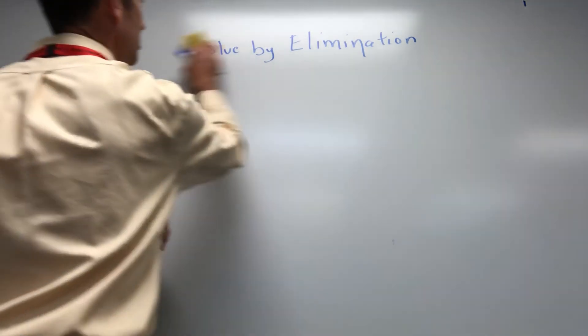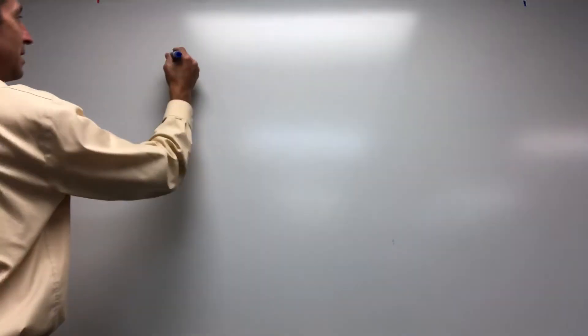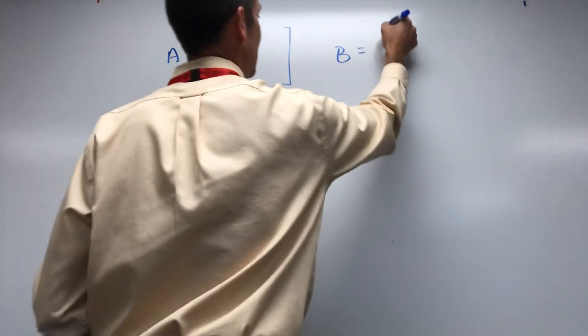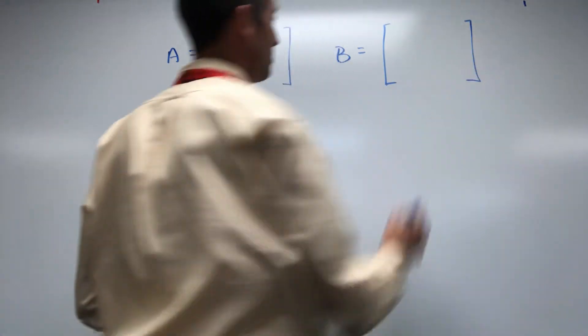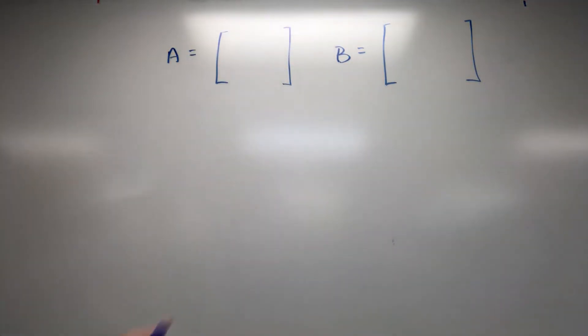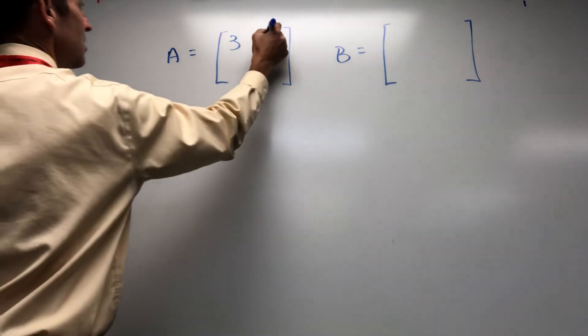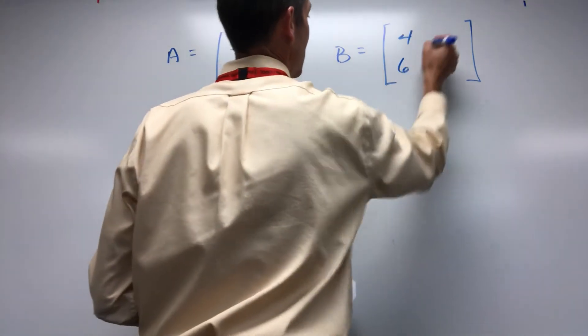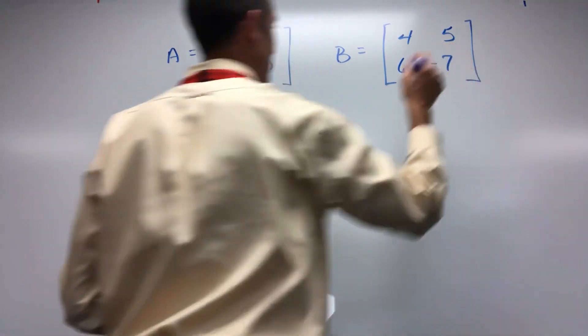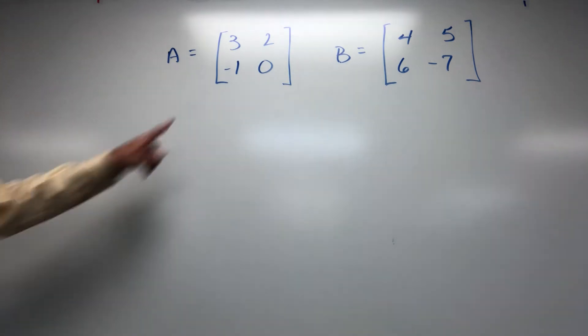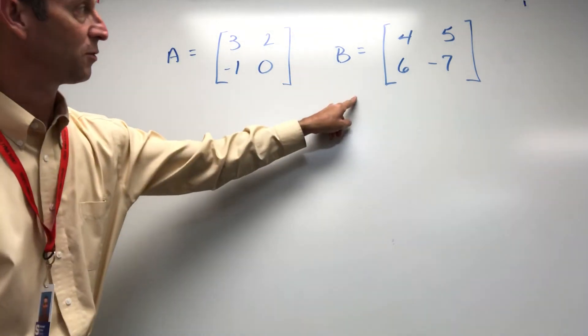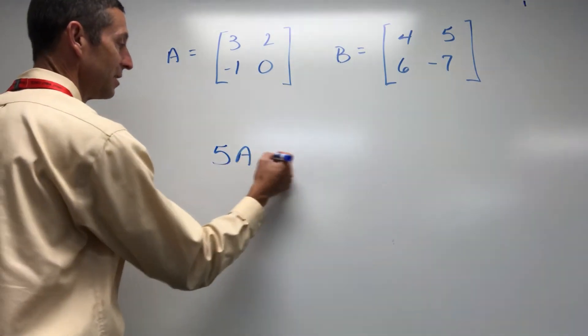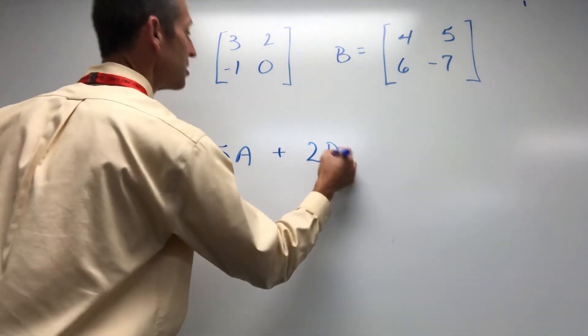All right, last question coming up. Let's do a little matrices. Let's get you an A to work with, a B to work with. Okay, so you got a 2x2 for matrix A, a 2x2 for matrix B. This is our last question. We're going to do 5A plus 2B.